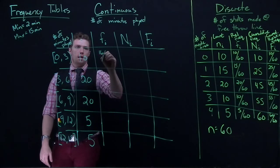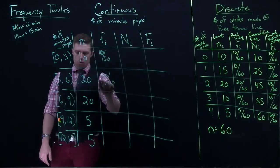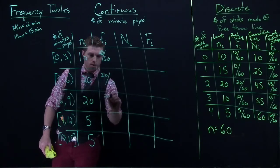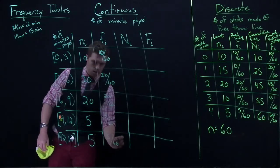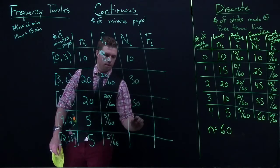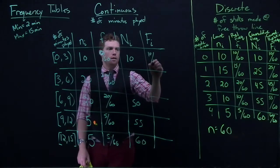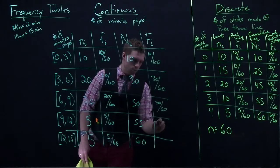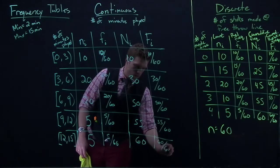I'm just going to finish this up real quick. So we'd once again, 10 divided by 60, 20 divided by 60, 20 divided by 60, 5 divided by 60, 5 divided by 60. And then over here, 10, 30, 50, 55, 60. And then again, 10 out of 60, 30 out of 60, 50 out of 60, 55 out of 60, and then 60 out of 60.